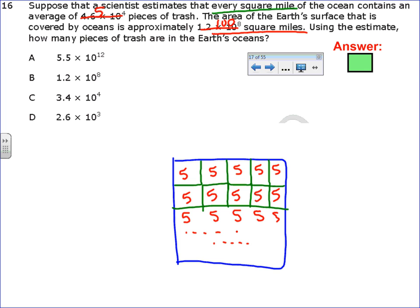So if I were to estimate the total number of trash, if each square mile has 5, and there's 100 total square miles, well, that's 5 times 100. That would be 500 pieces of trash. So what did I do there? I multiplied. Well, now that I know what operation to use, I'm going to go back and use the real numbers.